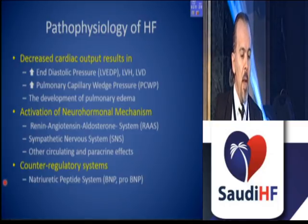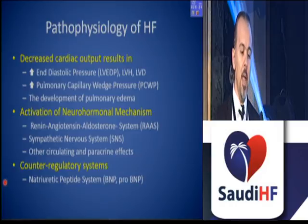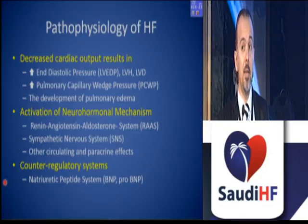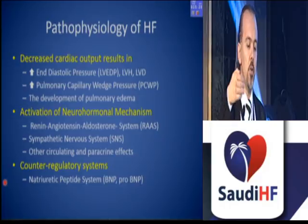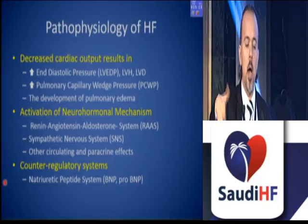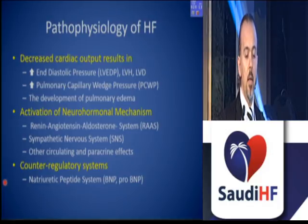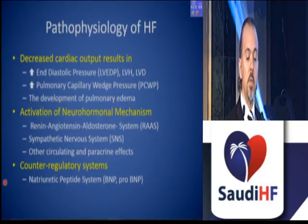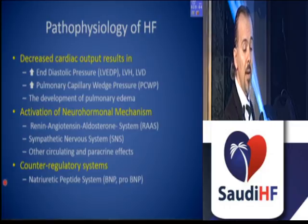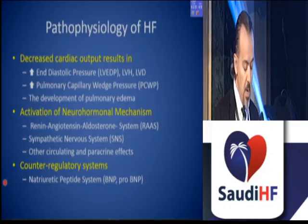When we look at the pathophysiology, it is the decreased cardiac output which results in increased end-diastolic pressure and increased capillary wedge pressure, along with activation of neurohormonal mechanisms. The excessive neurohormonal activation is regarded as the bad guys, mainly driven by the renin-angiotensin-aldosterone axis, the sympathetic nervous system, and other circulating autocrine and paracrine effects. On the other hand, there are counter-regulatory systems — the good guys — namely the natriuretic peptide systems.